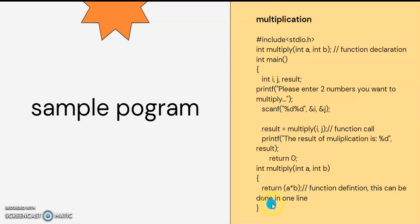So the declaration means that the function is just declared, similar to a variable declaration. The function is set up with its return type, name, and parameters. The function definition, on the other hand, provides the actual code body directly in the source. The function name and parameters are shown in the function header as the function definition.